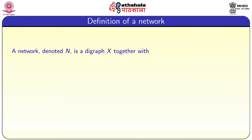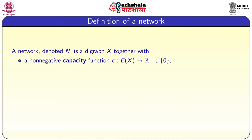Definition of a network: a network denoted N is a digraph X together with a non-negative capacity function. This capacity function is a mapping from the edge set of X to non-negative real numbers — R-plus union 0, meaning the set of all positive real numbers with 0 allowed. For each directed edge, we are giving a weight called the capacity of that edge.